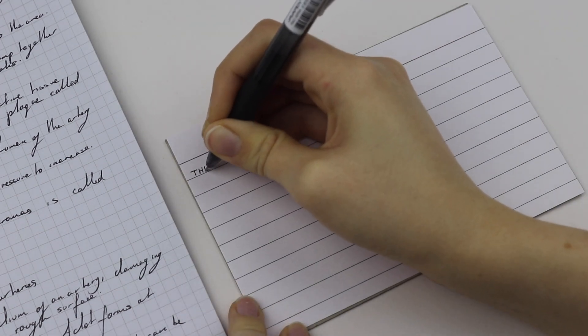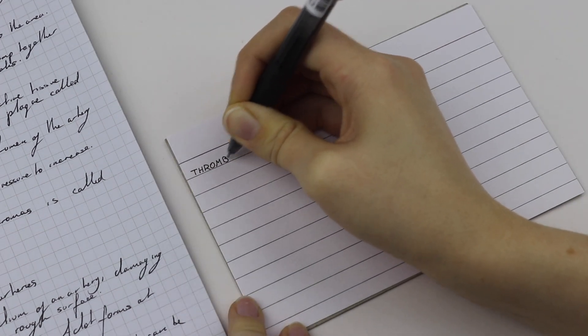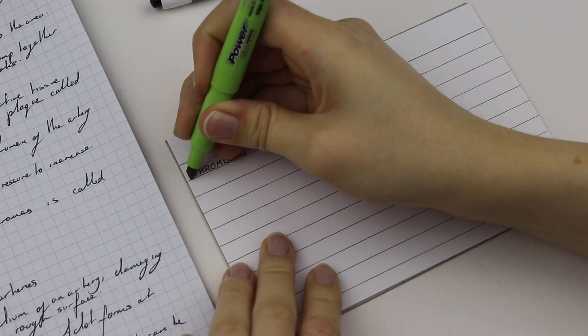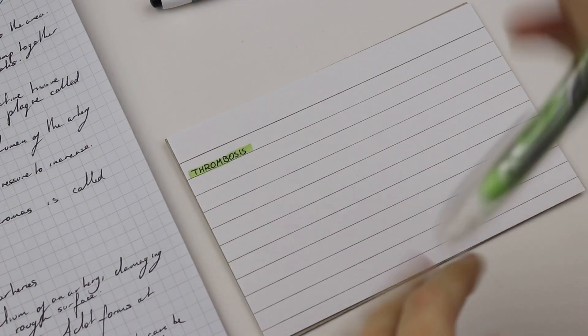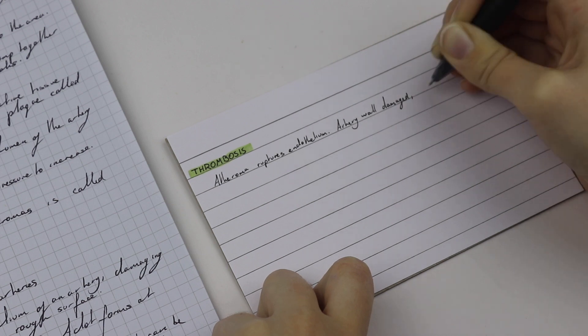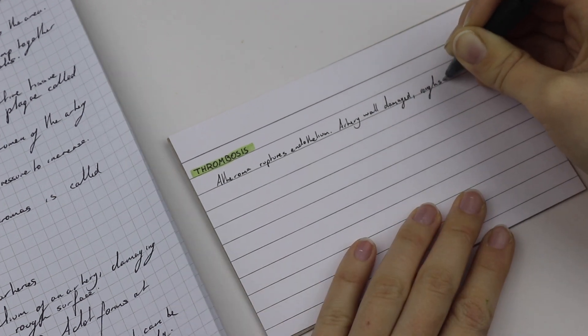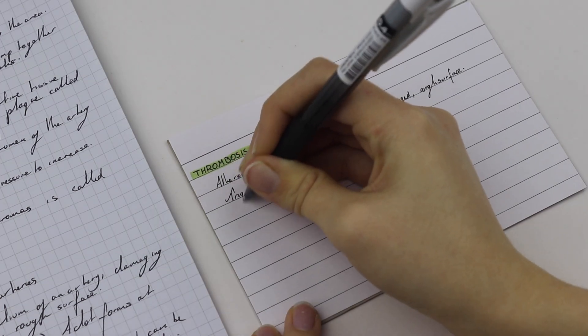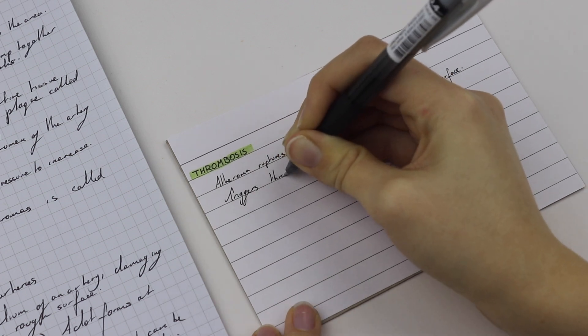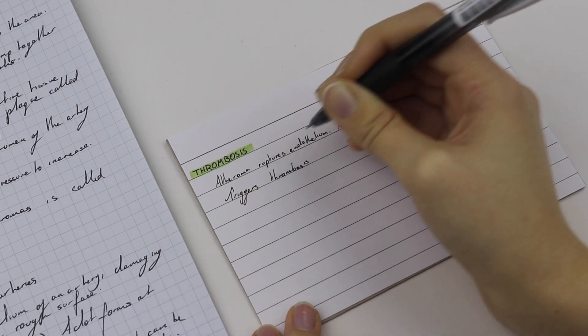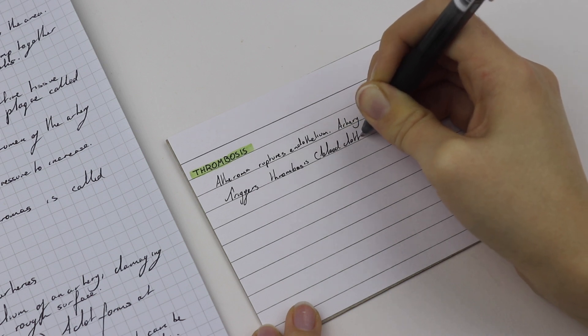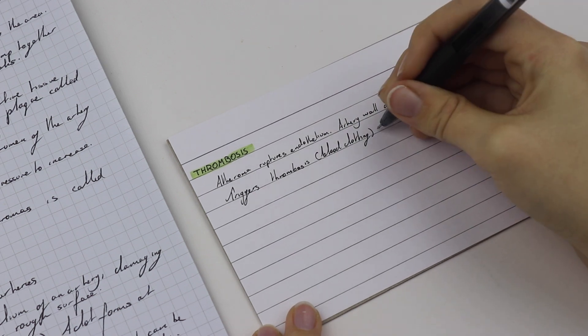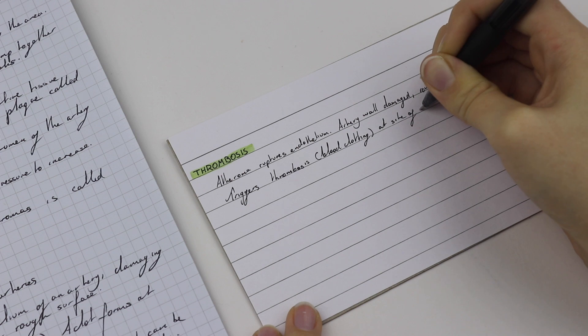On the reverse side, I'm then writing thrombosis in capitals, and then I will be highlighting that and then going through and bullet pointing my information, but really condensing it and concising it as much as I physically can. You can see I'm also starting to implement that same line technique where I'm basically saving a space for all of the indentations or bullet points.